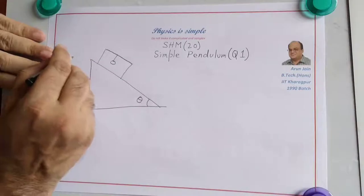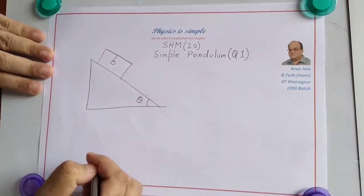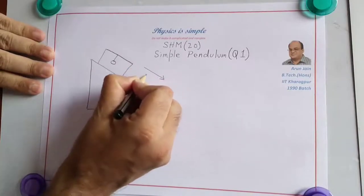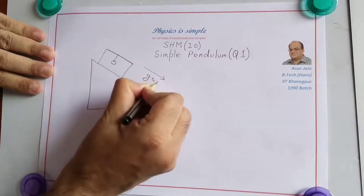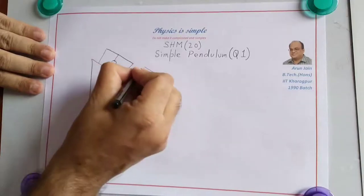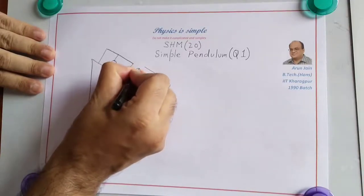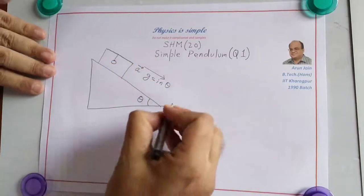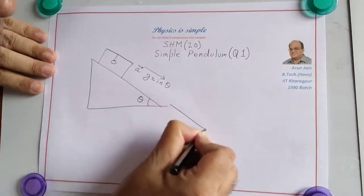So this cart is sliding down without friction. It will have an acceleration, G sine theta in this direction. This is the acceleration vector of the cart. And this direction, we can call it x-axis.